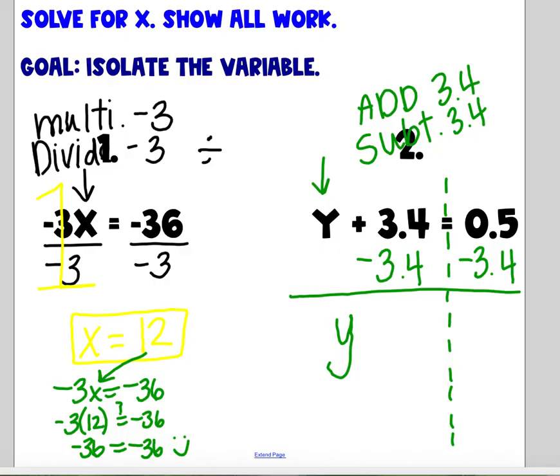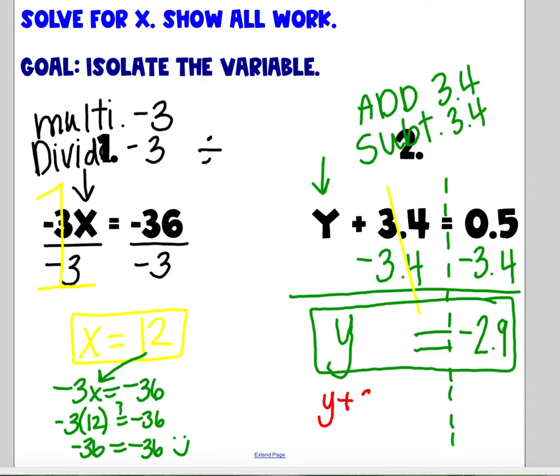So I'm left with y. What's 3 fourths minus 3 fourths? Zero equals 5 tenths minus 3 fourths. Decimals, think money. What's 50 cents minus 3 dollars and 40 cents? Negative 2 dollars and 90 cents. Again, we can check our solution by taking our original equation and plugging in what we got. Negative 2 and 9 tenths plus 3 fourths will that equal 5 tenths? Yes it does. 5 tenths equals 5 tenths. So we did it right.